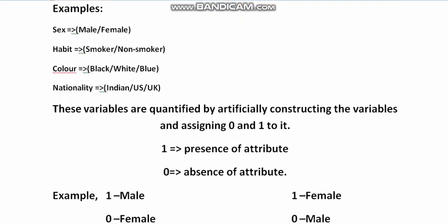We may have a number of qualitative variables in everyday life, such as gender or sex (male and female), habits such as smoker and non-smoker, colors such as black, white, and blue, and nationality such as Indian, US, or UK.